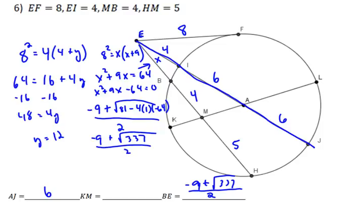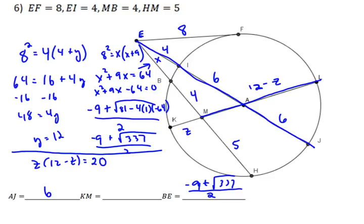Last thing is to find KM, so we'll call this one Z. That is useful because KL is a diameter, and we just found out the diameter is 12, so we could call LM 12 minus Z. That means we're going to have Z times 12 minus Z equals 4 times 5, which is 20.